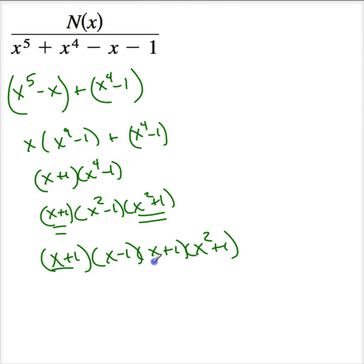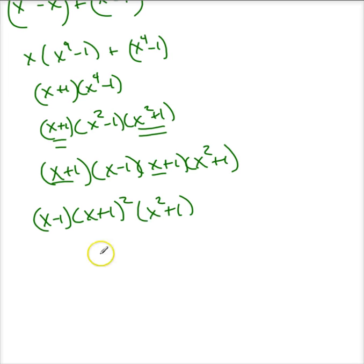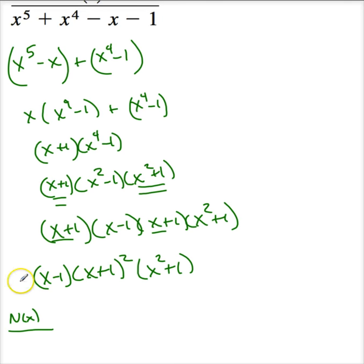So let me collect like terms. So this is, let's see, let's do x minus 1 times x plus 1 squared times x squared plus 1. So when I do my partial fractions breakdown, I have N(x) divided by, let's see, I've lost it, what was it? One problem with running out of space here. x to the 5th plus x to the 4th minus x minus 1. This is going to be A divided by x minus 1.